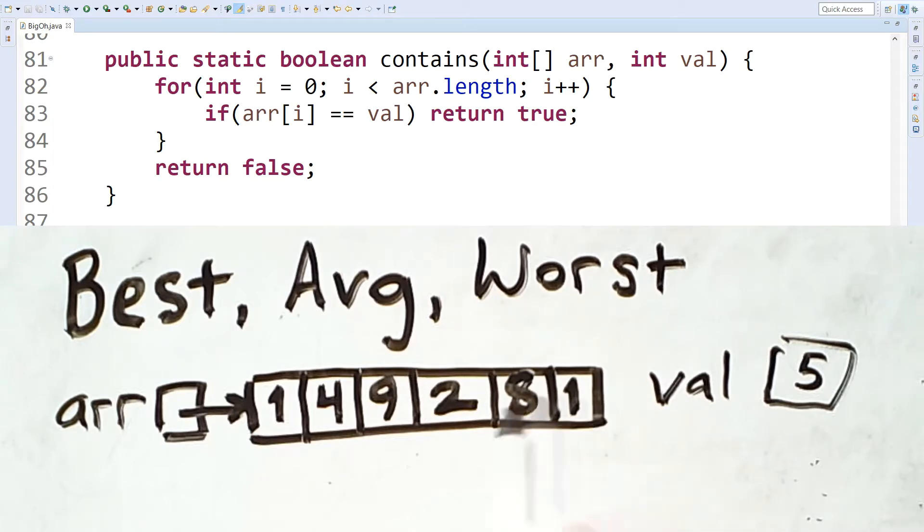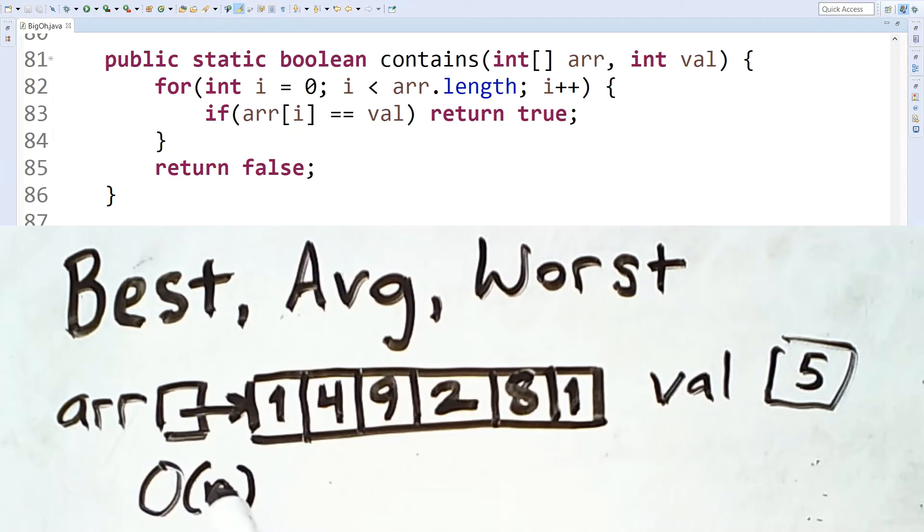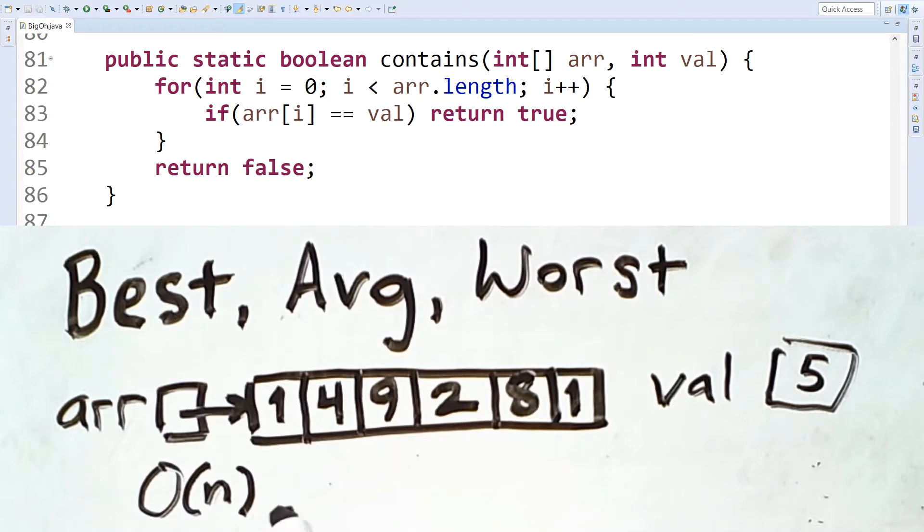In this case, the runtime is O of N. This is the longest this code could ever take, and because it is taking a long time, this is considered the worst case.